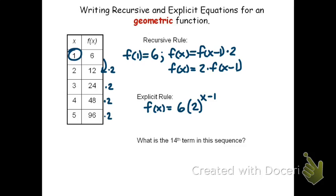Now, we can use this explicit rule to help us find what the 14th term in the sequence is. To do this, we will take the equation f of x equals 6 times 2 quantity x minus 1, and we'll substitute in 14.